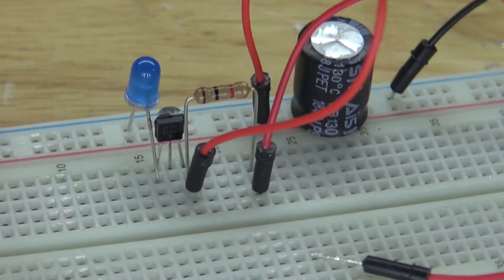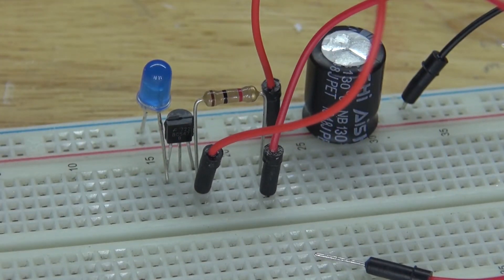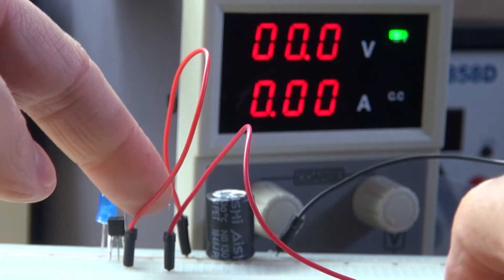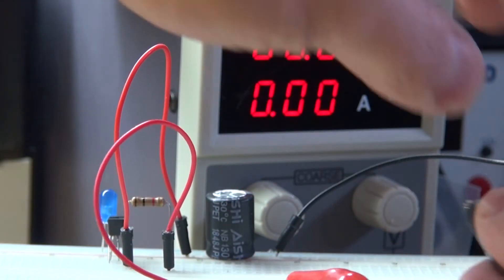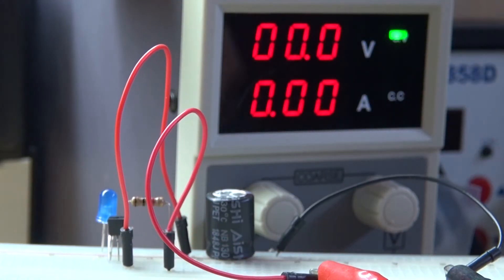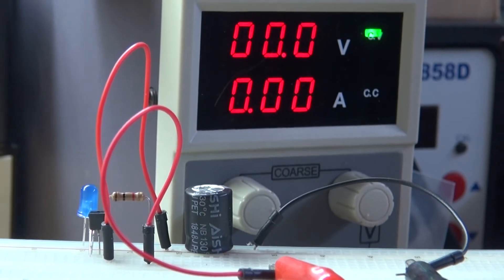And there you go, the circuit is now complete and should look just like this. Next I'm going to connect the positive wire from the lab bench power supply to the input voltage, and connect the negative to the common ground. There we go, the circuit is now coming on.